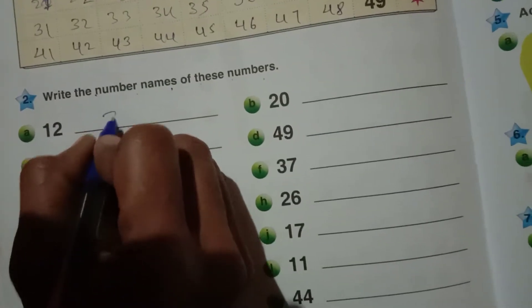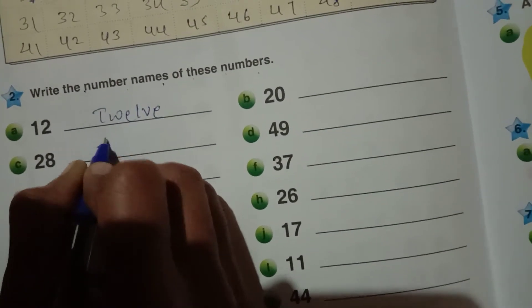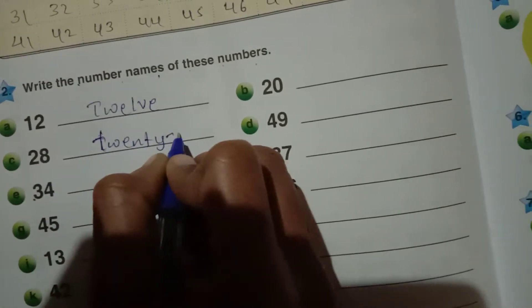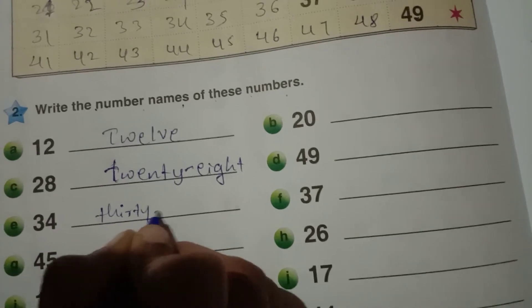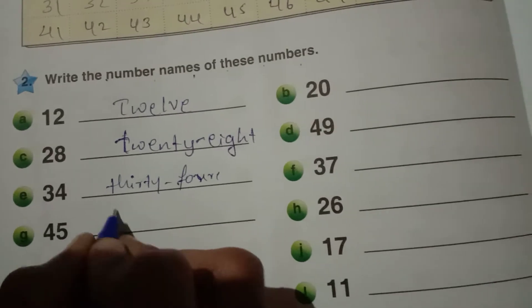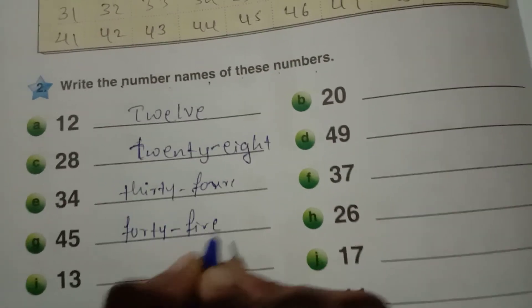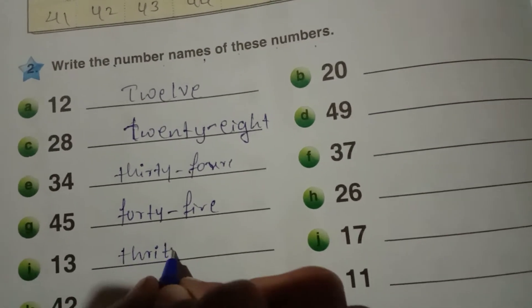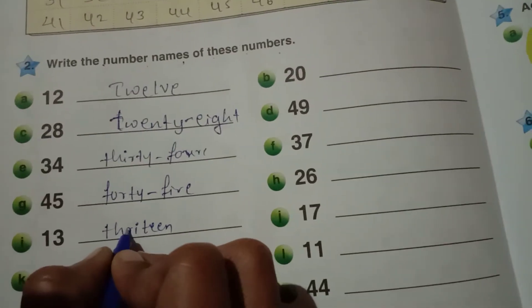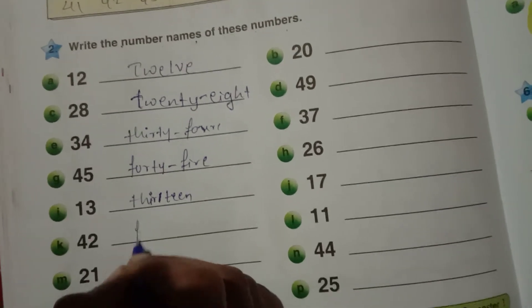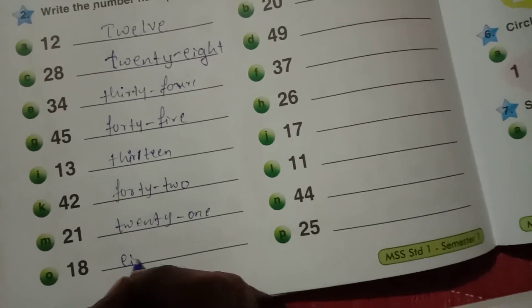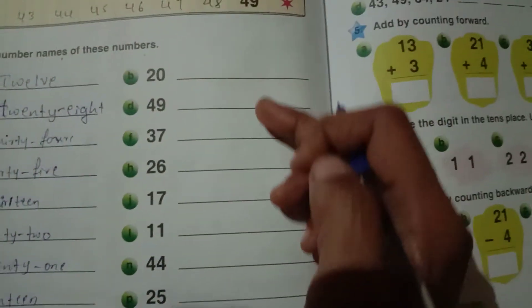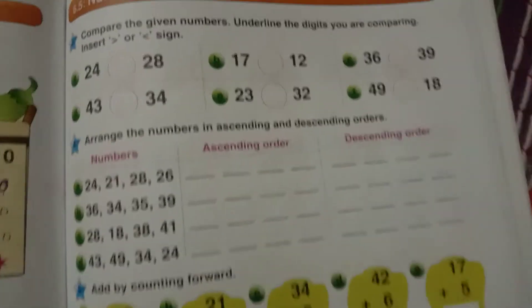Next number you will see in next class. Okay, write the number names, the names of the numbers. You have to write: number 12, 20 - write small letter, 28, 38, 34, 45, 13, 42, 21, 18. Remaining you have to write in your textbook. Okay.